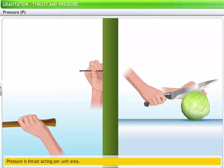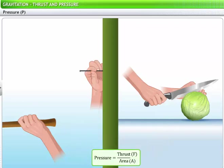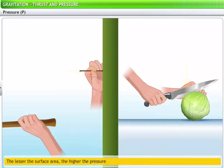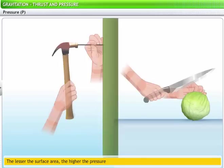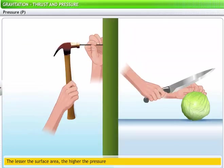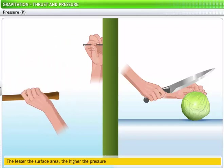Pressure is denoted by the letter P. Hence, pressure is calculated by dividing thrust with area. The lesser the surface area of an object, the more the pressure applied by that object. The pointed tip of the nail minimizes the surface area of the nail on which thrust is applied. Therefore, while driving the nail into the wall, the pressure of the hammer is maximized, which helps drive the nail into the wall.